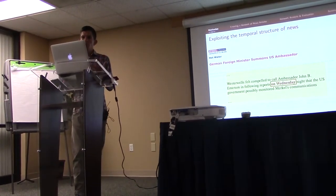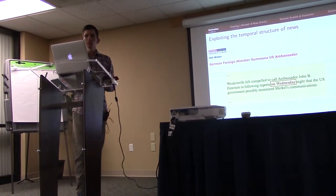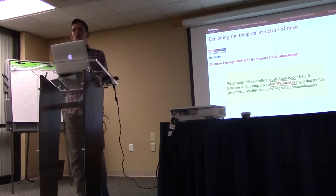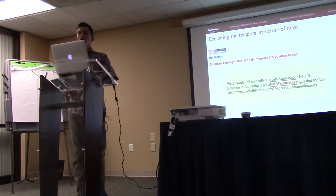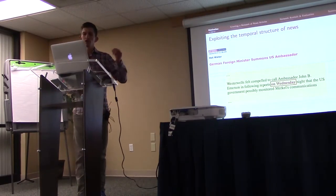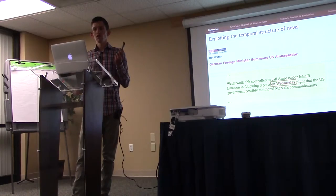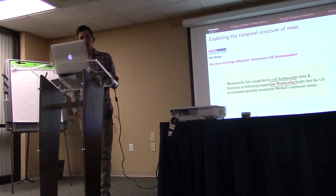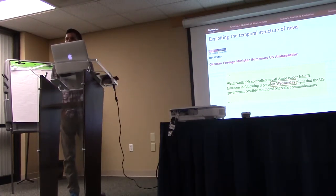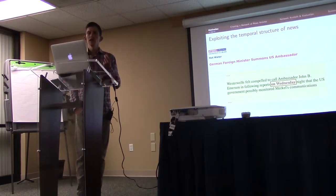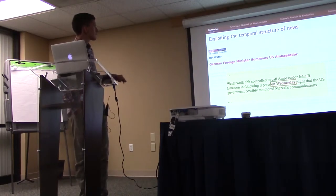So let's look at what we can do about this. Here's a random article titled 'The German Foreign Minister Summons the U.S. Ambassador.' Reading this article, you might wonder why the German Foreign Minister did that. If you go on and read the article, you will find a sentence saying that the Foreign Minister called the U.S. Ambassador following reports on Wednesday night that the U.S. Government possibly monitored certain communications. So in this case there is an explicit date reference — something happened on Wednesday night — and this gives us explicit background information required to understand the story you're currently reading.